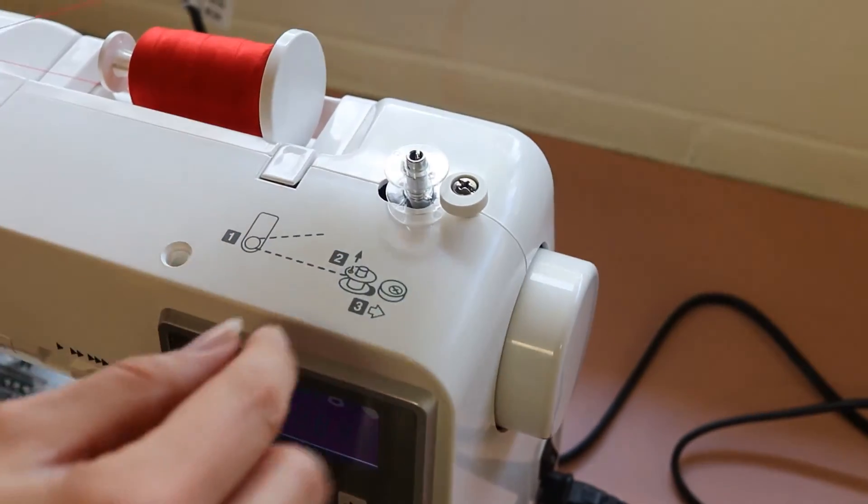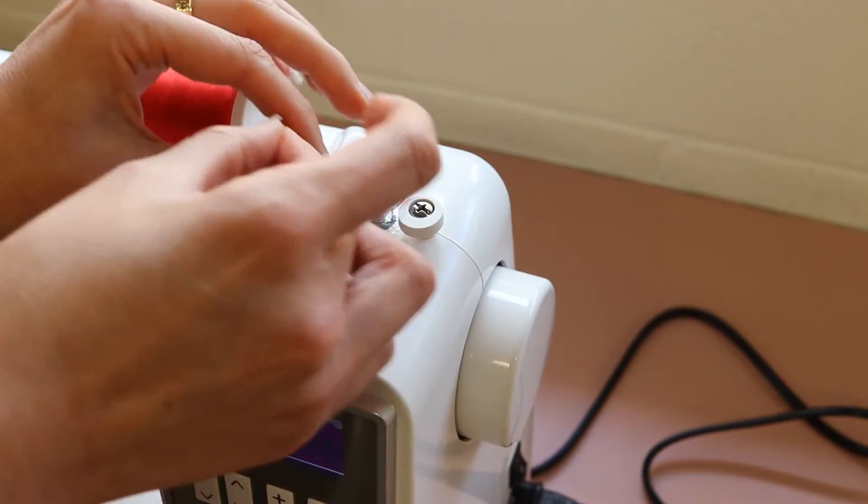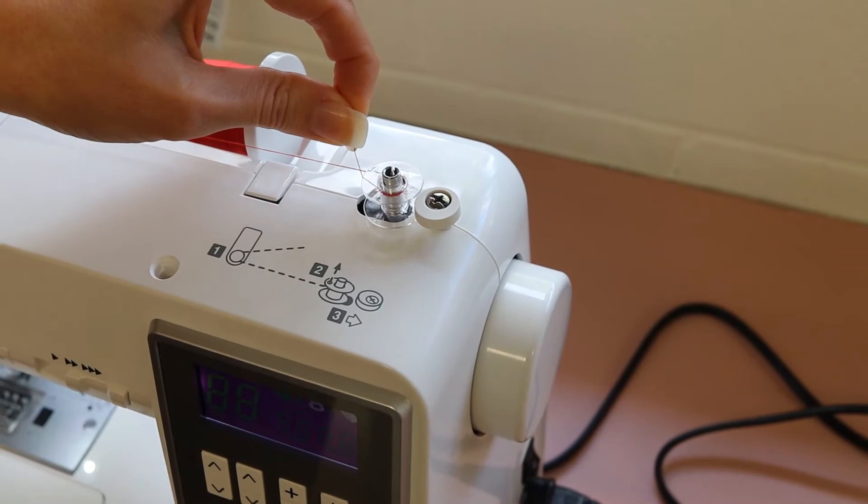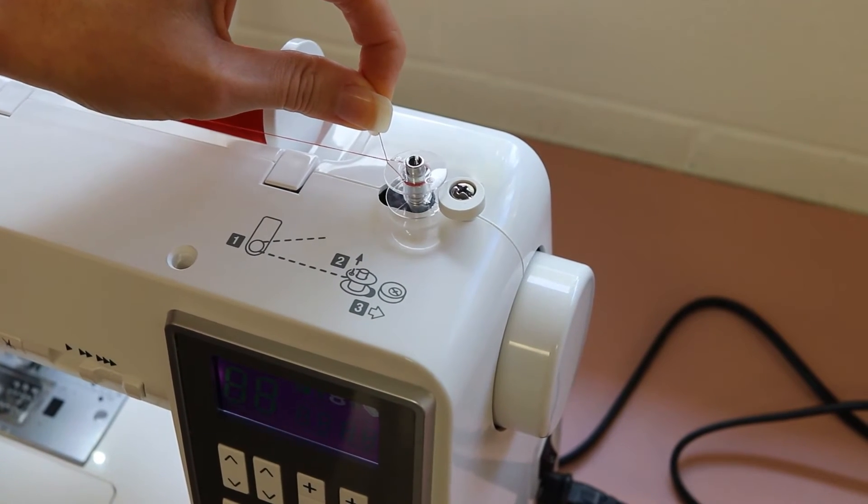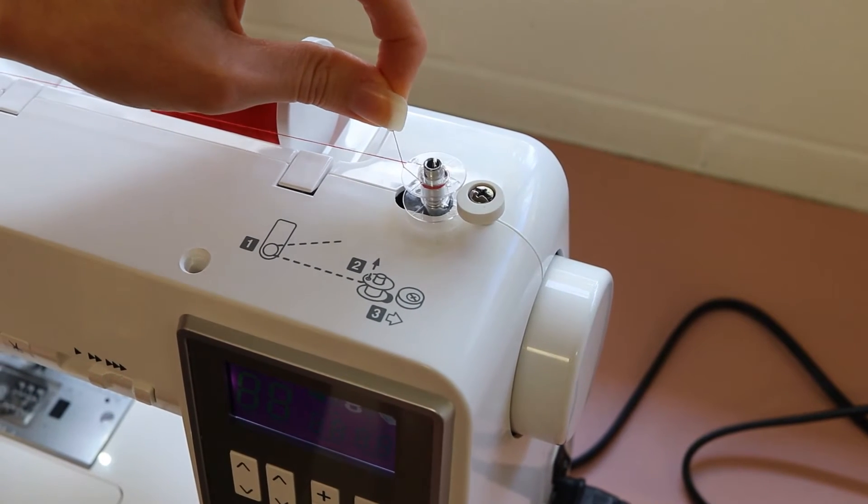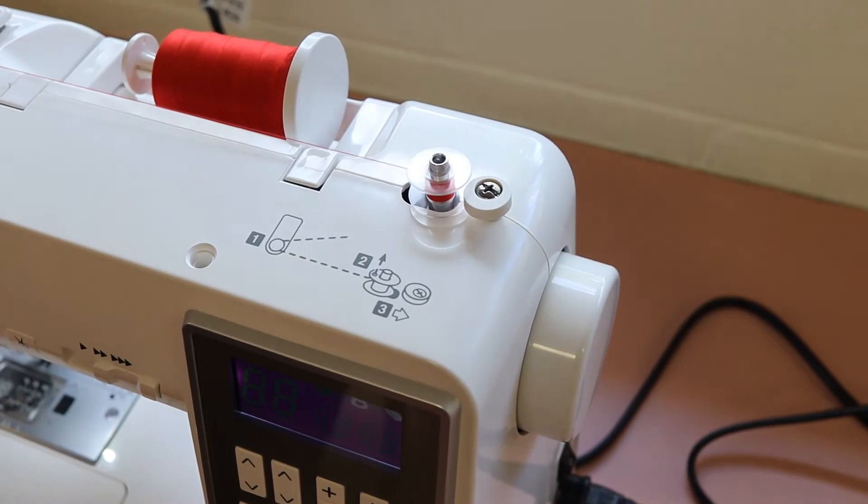Now I'm going to come back up to my bobbin, wrap the end of the thread around it two or three times. It's important that you hold the end of the thread as you start to press down on your foot pedal to put the thread onto the bobbin so it doesn't come undone or loose. So I'm now going to press down on my foot pedal. I can see that's caught on, so I can let go.